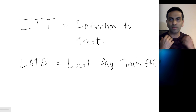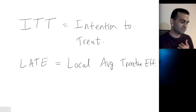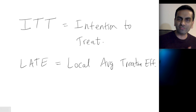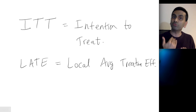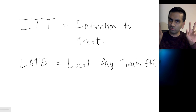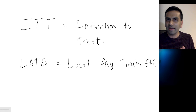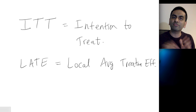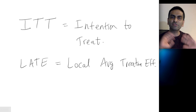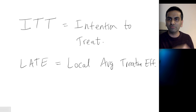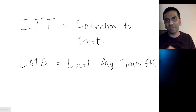So: offering someone a college scholarship increases their income by a certain amount whether they actually go to college or not — simply offering them that has that effect. That's what ITT really means. And LATE is an extension — with some math you can then see what the actual ATE is just for those who complied with your experiment. These vocab words are in the space of the treatment effects literature and are related to experiments with less than 100% compliance.